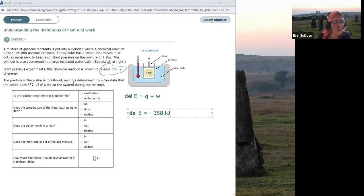The position of the piston is monitored, and it is determined the piston does 352 kilojoules of work on the system. Remember, the piston is part of the surroundings. So if the piston is doing 352 kilojoules of work, then W for the surroundings is going to be negative, because the surroundings is doing the work, which means W for the system is going to be positive. The system is absorbing work, or work is being done on the system.